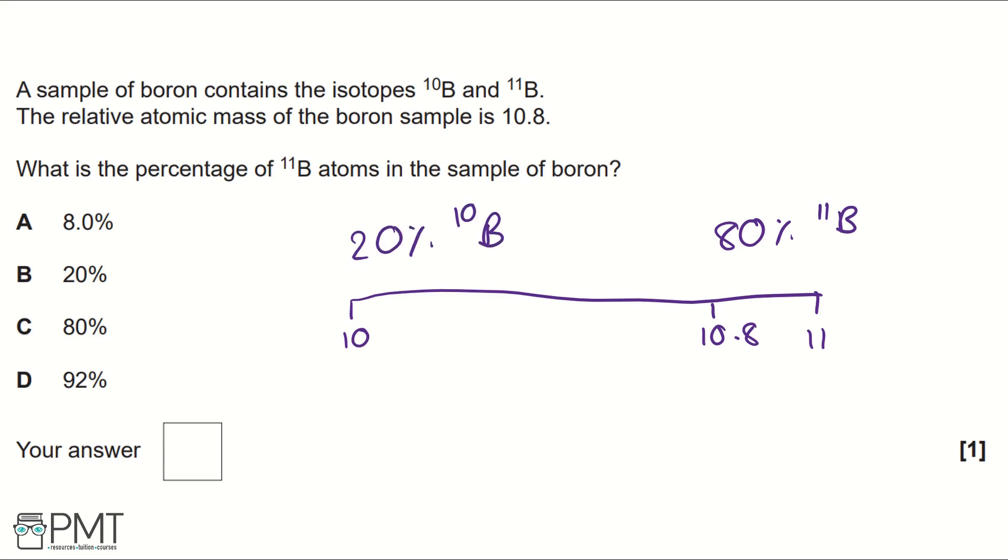We could check this by doing 20 times 10 over 100 plus 80 times 11 over 100. This is how you work out relative atomic mass using isotopes, and this would equal 10.8.